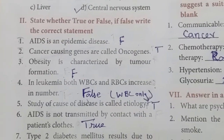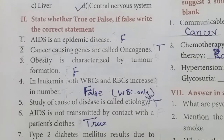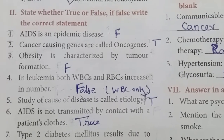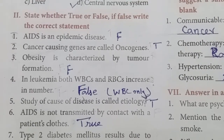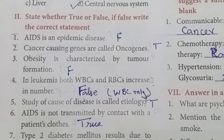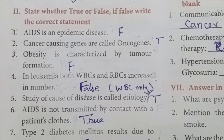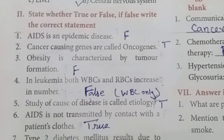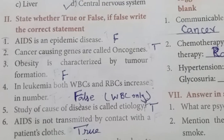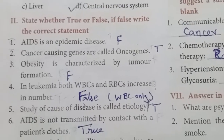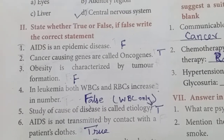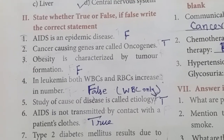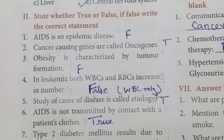The second section is True or False — if false, write the correct statement. 'AIDS is an epidemic disease' — this is false; it is a pandemic disease. Epidemic means it is restricted to only one area, whereas pandemic means it occurs everywhere in the world. AIDS can occur everywhere in the world, so it is a pandemic disease.